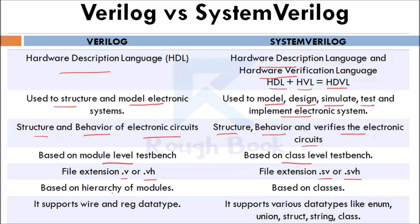Verilog is based on a hierarchy of modules, whereas System Verilog is based on classes. In Verilog, it supports wire and reg data types. System Verilog supports various data types like enum, union, struct, string, and class. So the main difference is that System Verilog is used for verification.